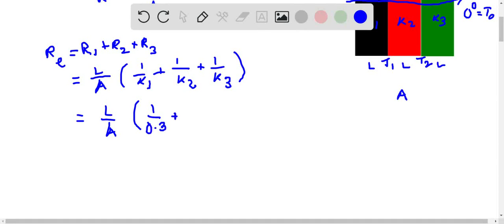L/A times (1/0.3 + 1/0.6 + 1/0.1). Let us simplify this and see how much we are getting. It's coming around 15L/A. So this is the equivalent resistance of the entire set of materials.